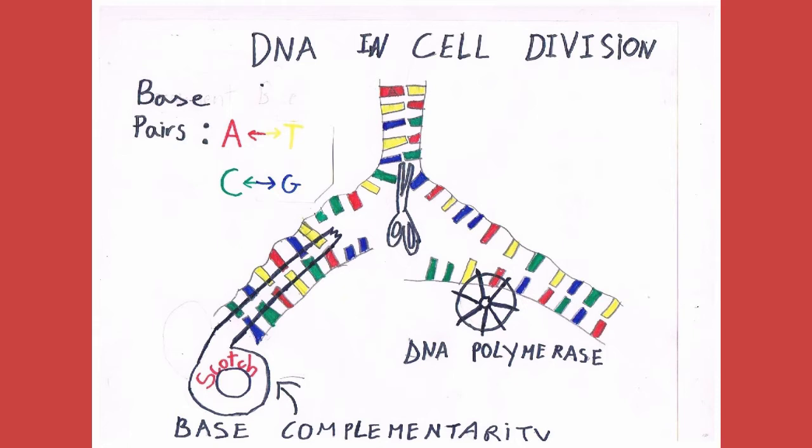This is called base complementarity. When DNA is separated for cell division, a machine inside the cell called the DNA polymerase creates the missing half for each of the already divided DNA strands using the rules of base complementarity.